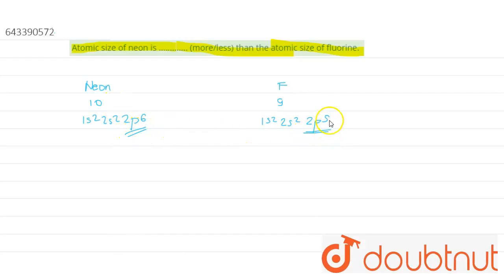But in fluorine it is not completely filled. One electron is still remaining to be filled.